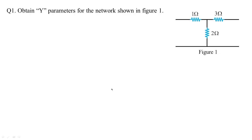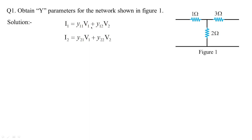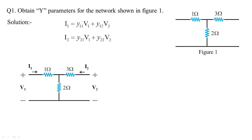Let us go into the problem. In the first problem, we need to find out the Y parameters. We will assign the actual equations of Y parameters: I1 equals Y11·V1 plus Y12·V2, and I2 equals Y21·V1 plus Y22·V2. When input and output voltages are connected to the two-port circuit, the currents flowing into the network give us the admittance parameters.